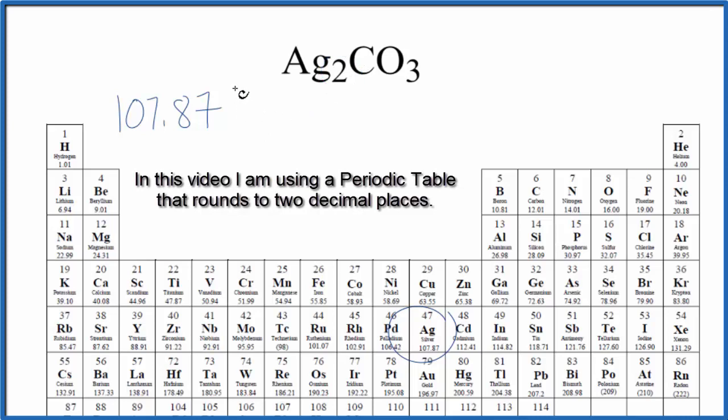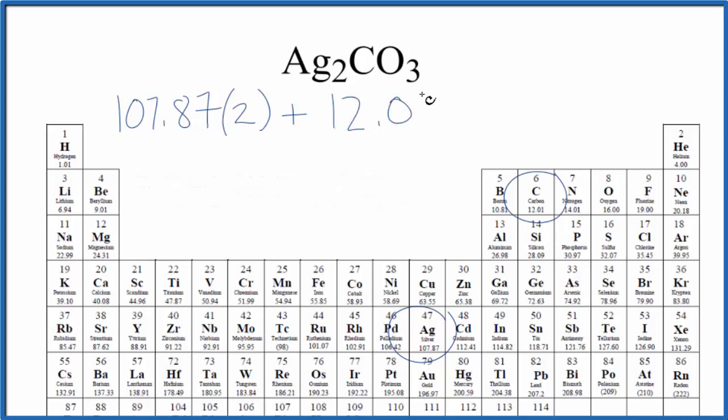Two silver atoms, we multiply this by two, plus carbon, that's 12.01 grams per mole, and then oxygen, 16.00 grams per mole. We have three oxygen atoms multiplied by three. We do the math here and end up with the molar mass for Ag2CO3.